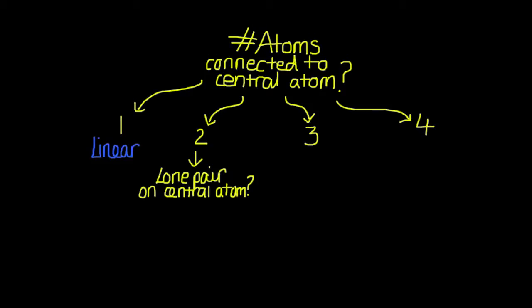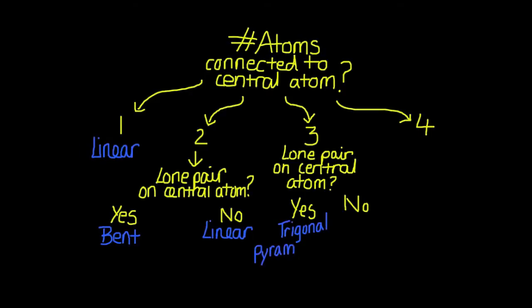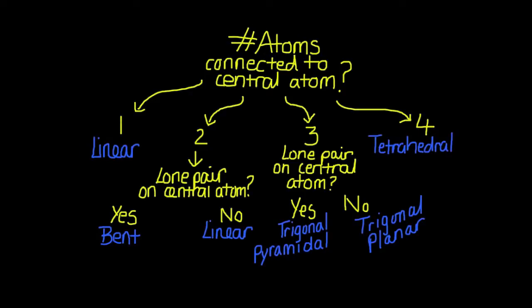Students should be able to identify molecular geometries based on whether or not there are lone pairs on the central atom. From this, they should be able to identify molecular geometries: linear, bent, trigonal pyramidal, trigonal planar, and finally tetrahedral.